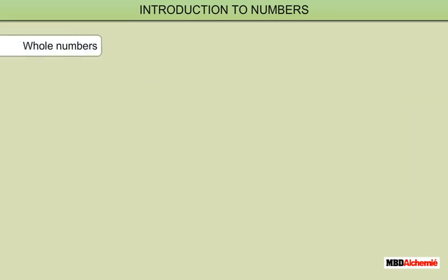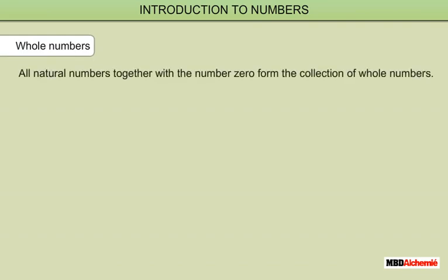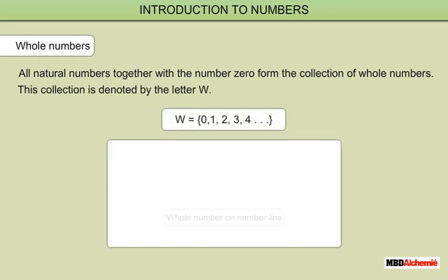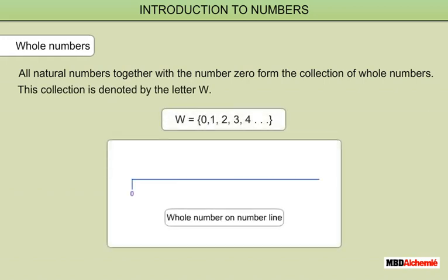Whole Numbers: all natural numbers together with the number 0 form the collection of whole numbers. This collection is denoted by the letter W. These are some whole numbers on the number line.